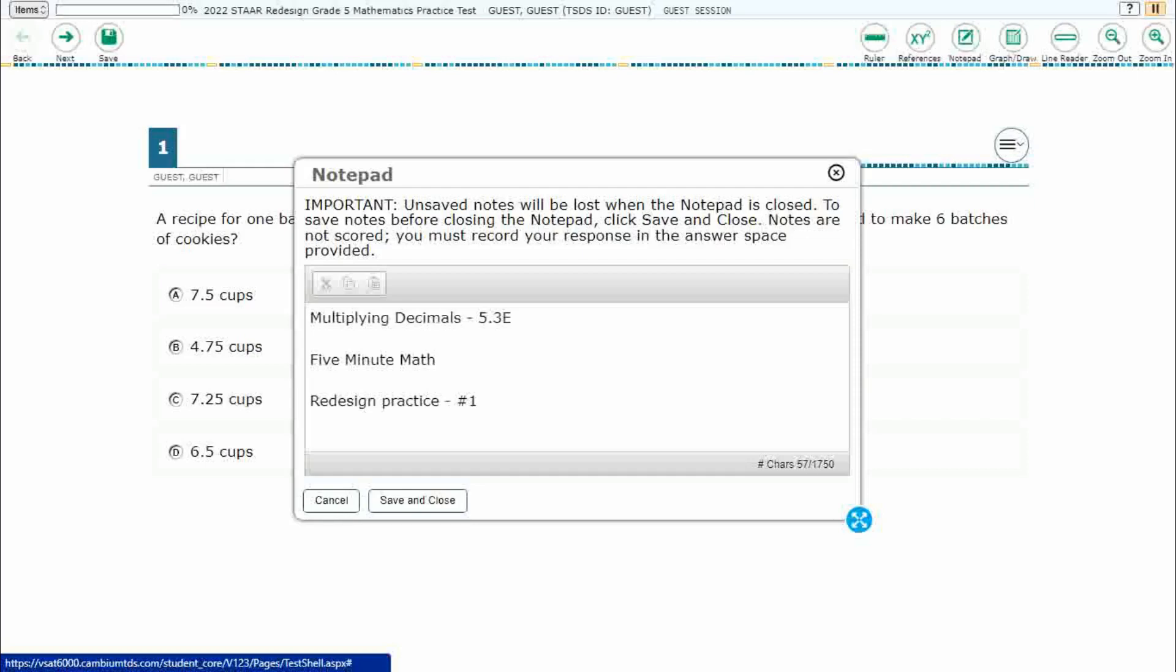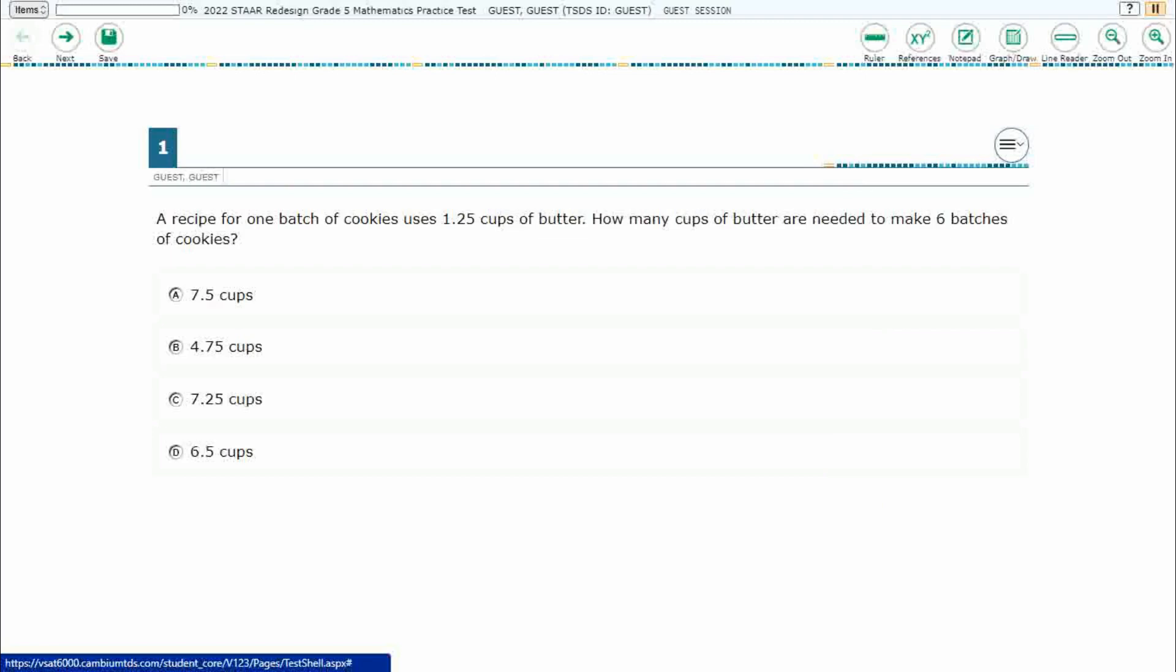Hello and welcome to 5-Minute Math. Today we are looking at the fifth grade concept of multiplying decimals. This is standard 5.3e in the great state of Texas and we are using item number one of the Redesign Practice Online Star Test.